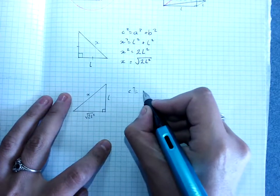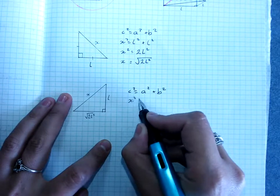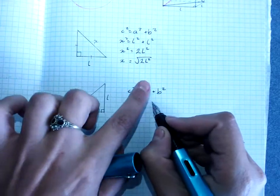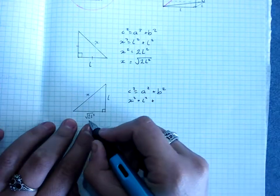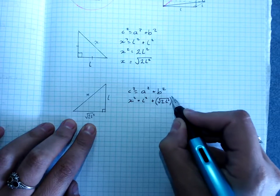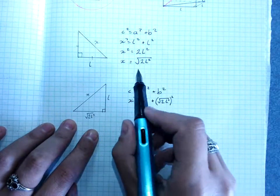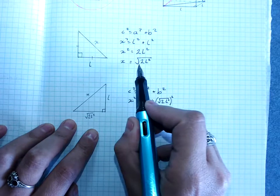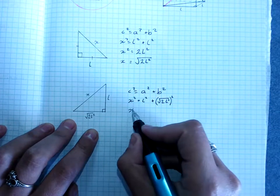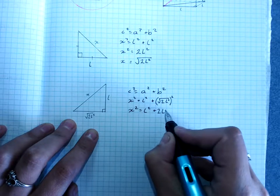And I want to find this side. C squared equals A squared plus B squared. X squared, we could have called it Y. Now this is L squared plus, I've got the square root of 2L squared squared. And the reason I didn't simplify that down is because I knew I'd have to square it again. And squaring a square root just ditches the square root. So that's X squared is L squared plus 2L squared.